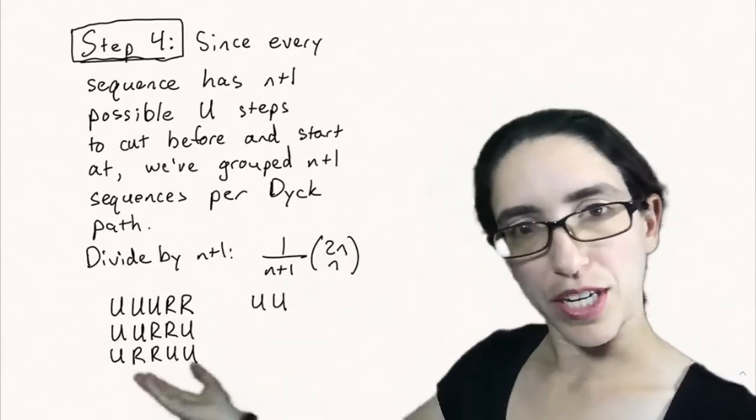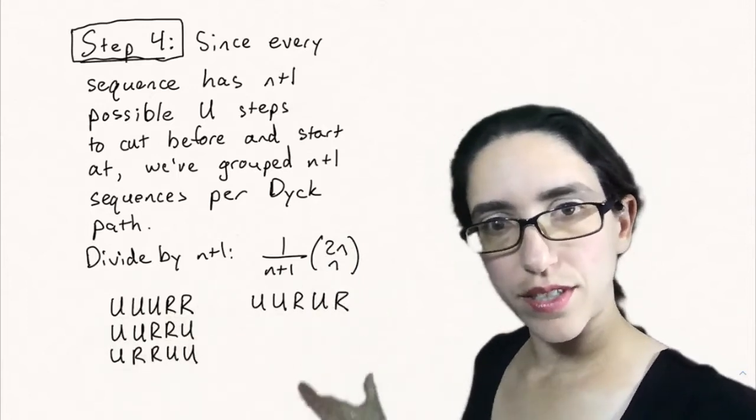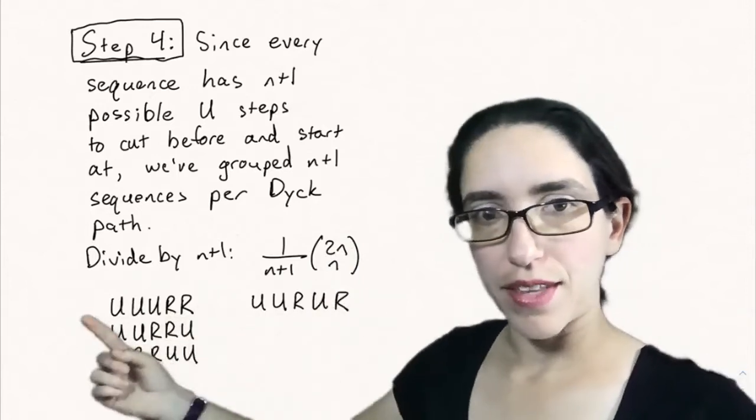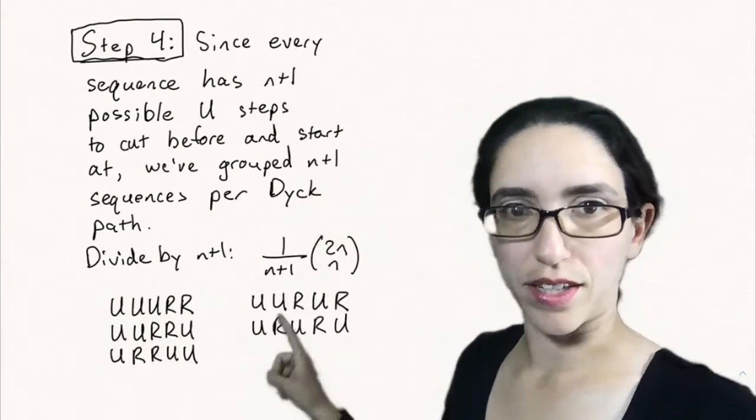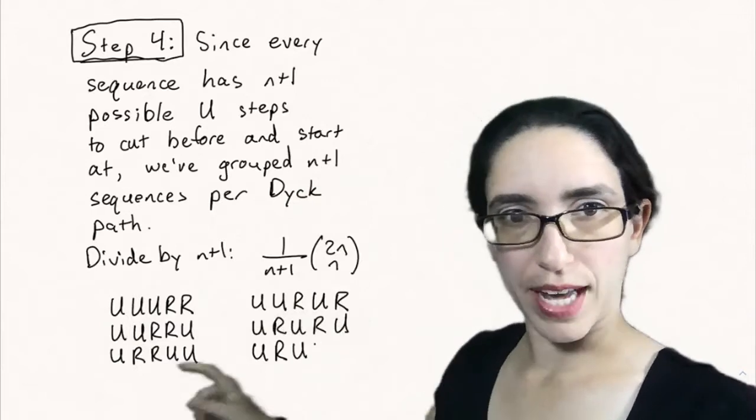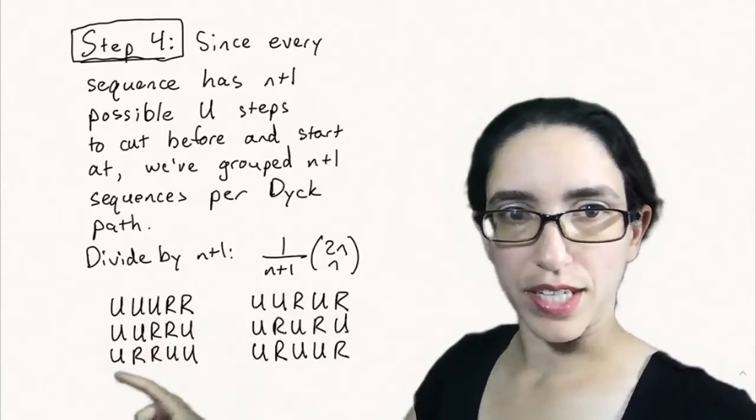Let's look at that example for n equals 2. We had these six sequences of ups and rights. Up, up, up, right, right certainly stays above the diagonal and up, up, right, up, right. Those stay above the diagonal. Here's the other shifts of these sequences.